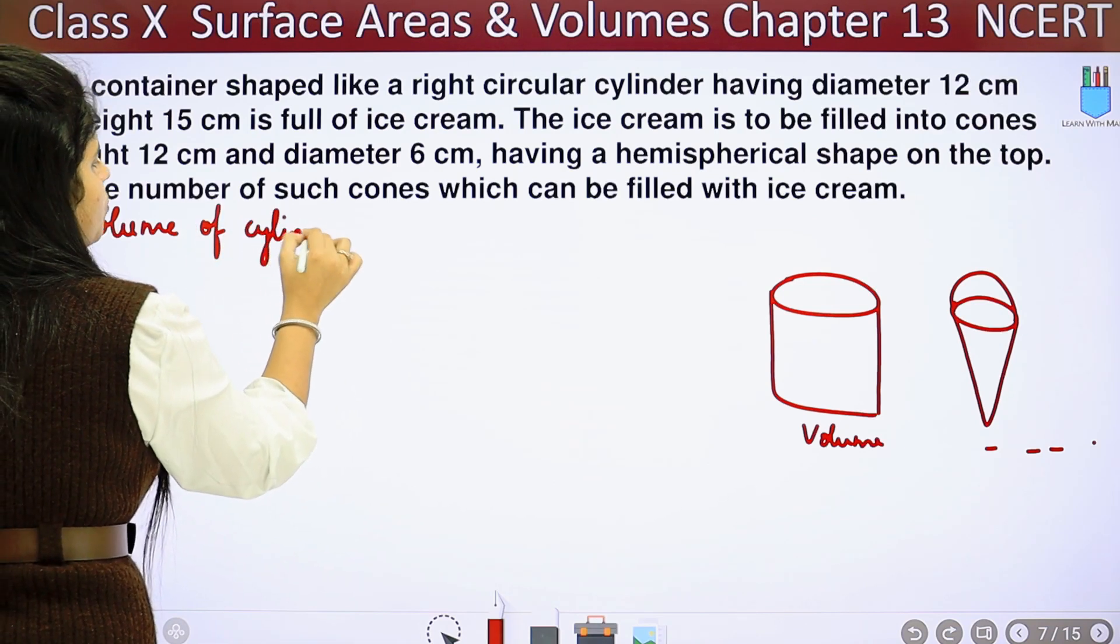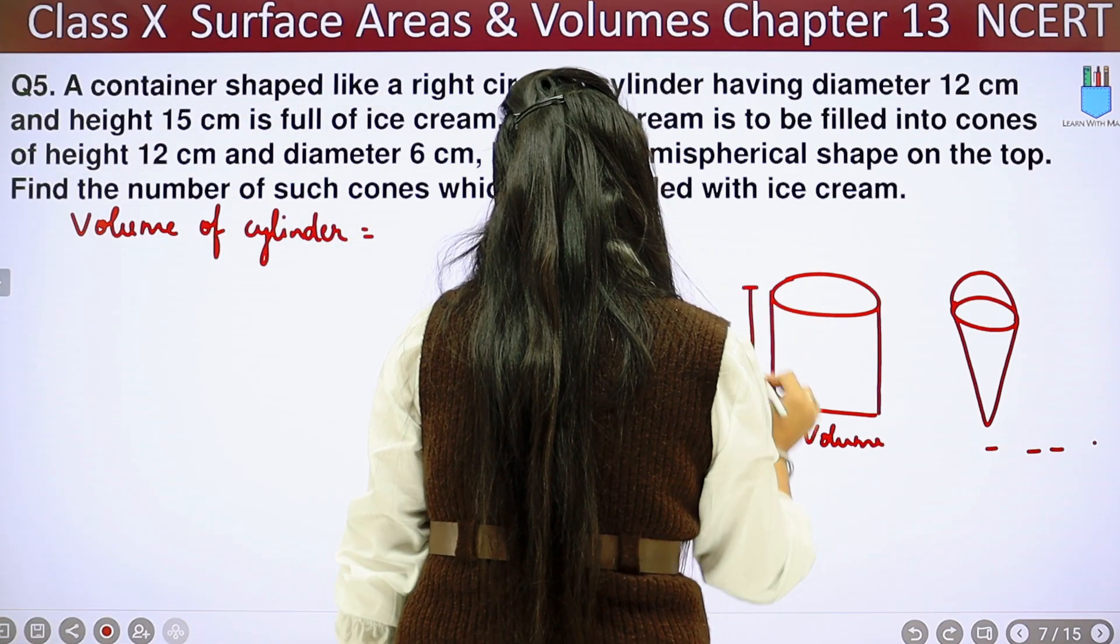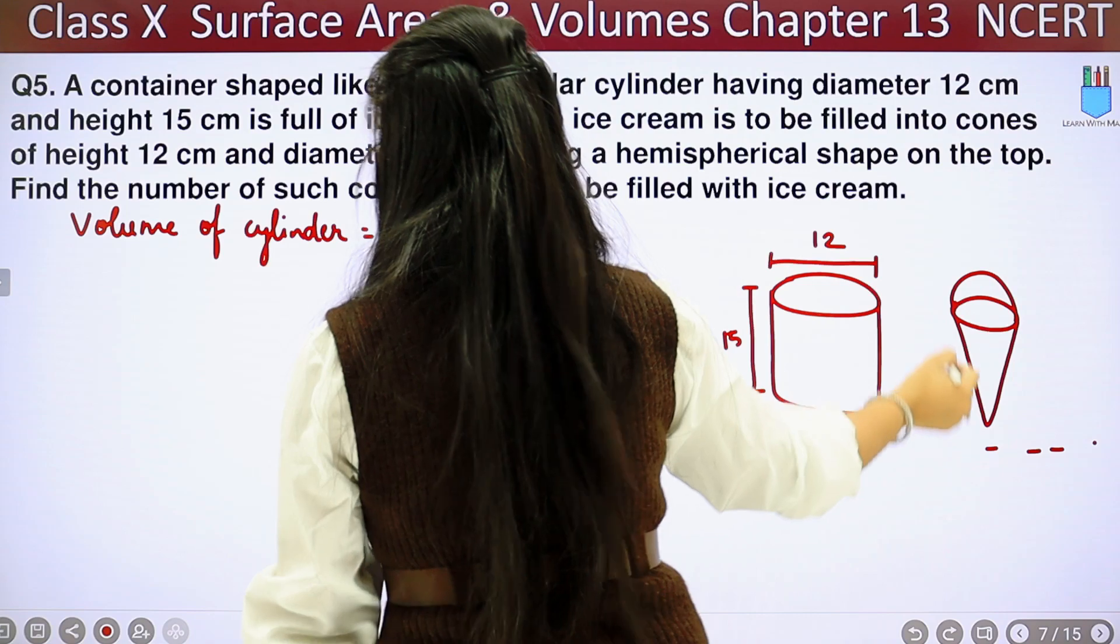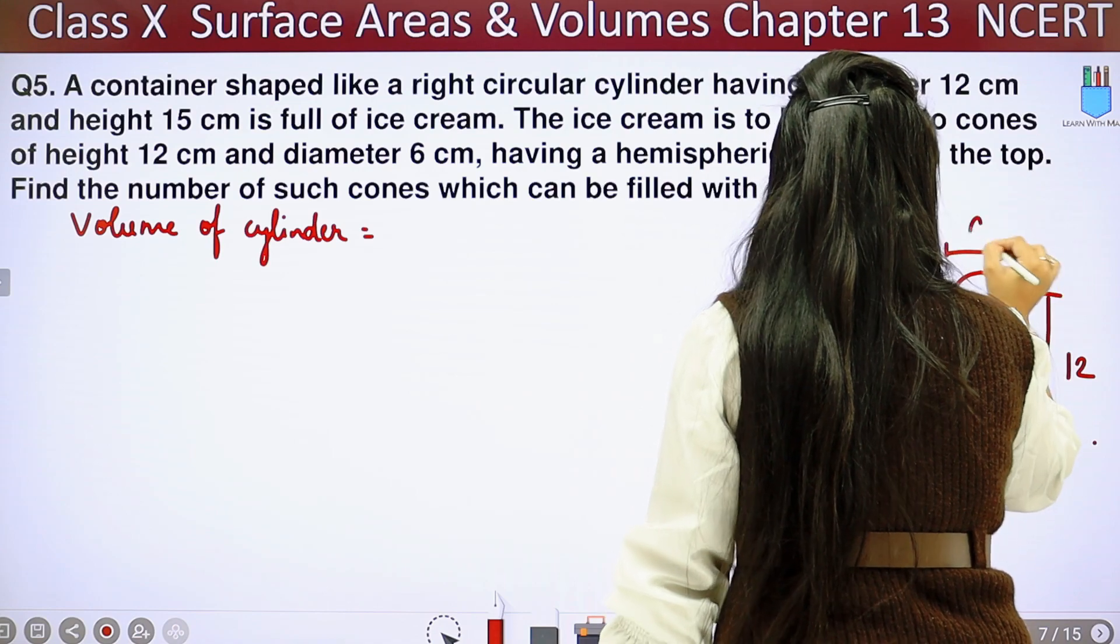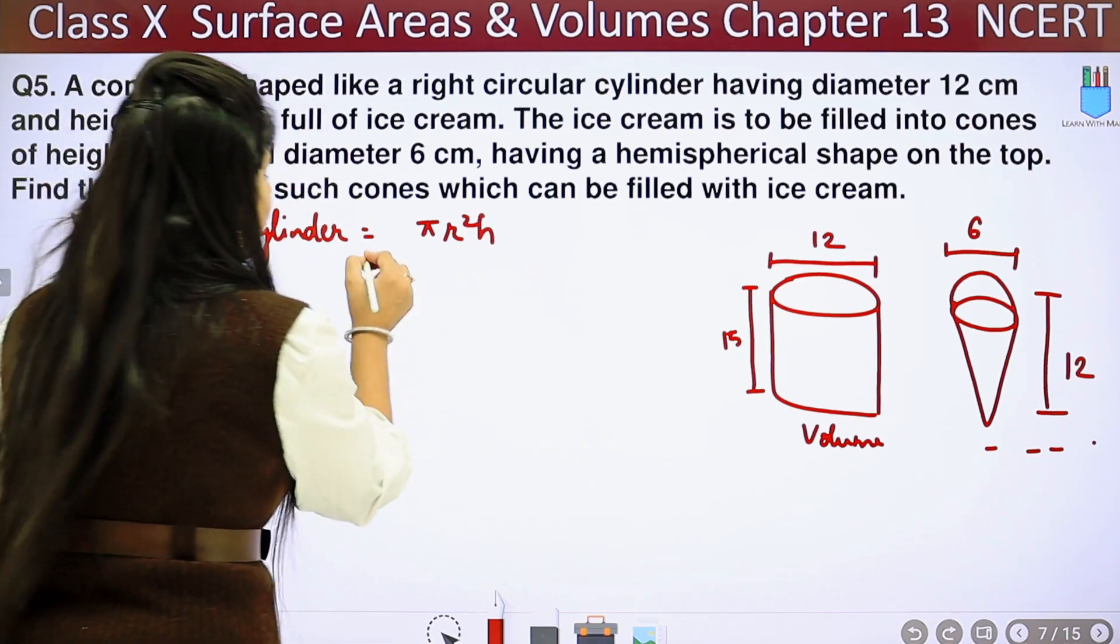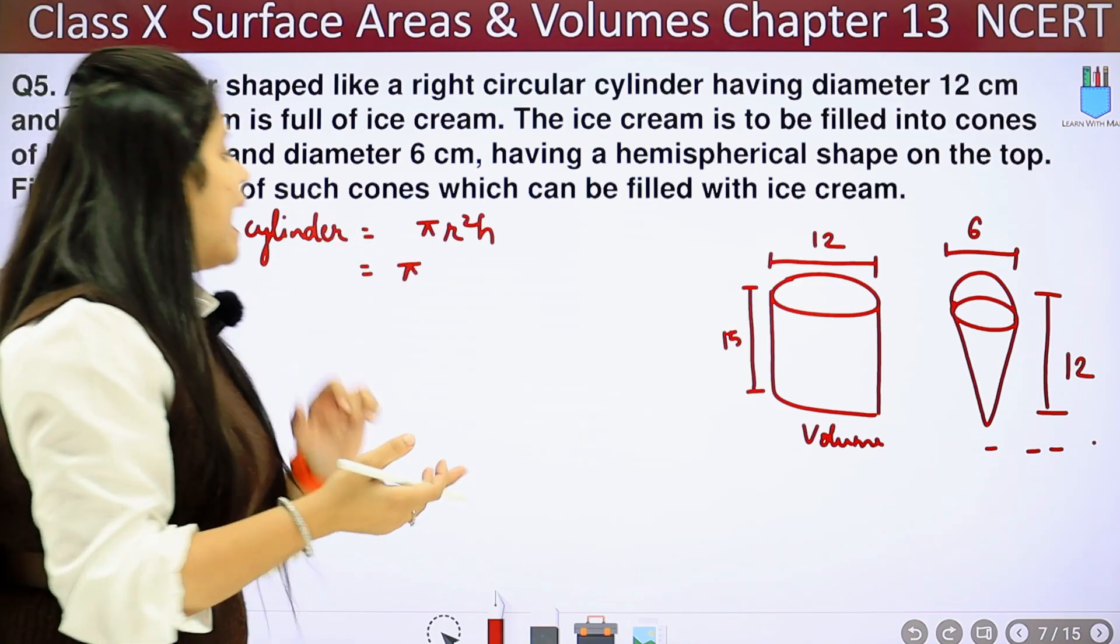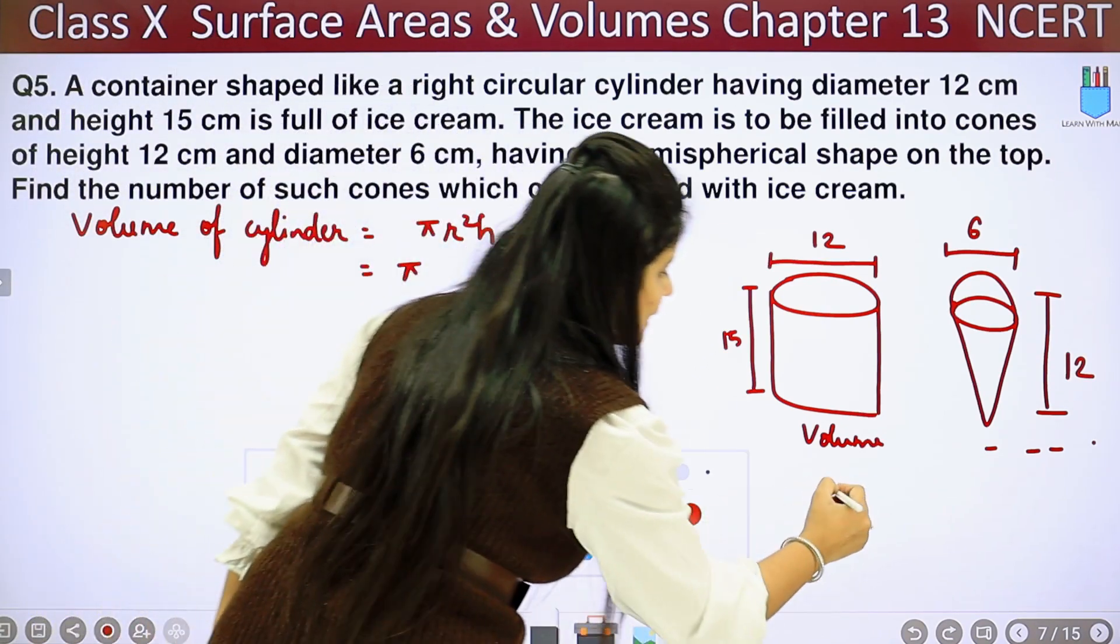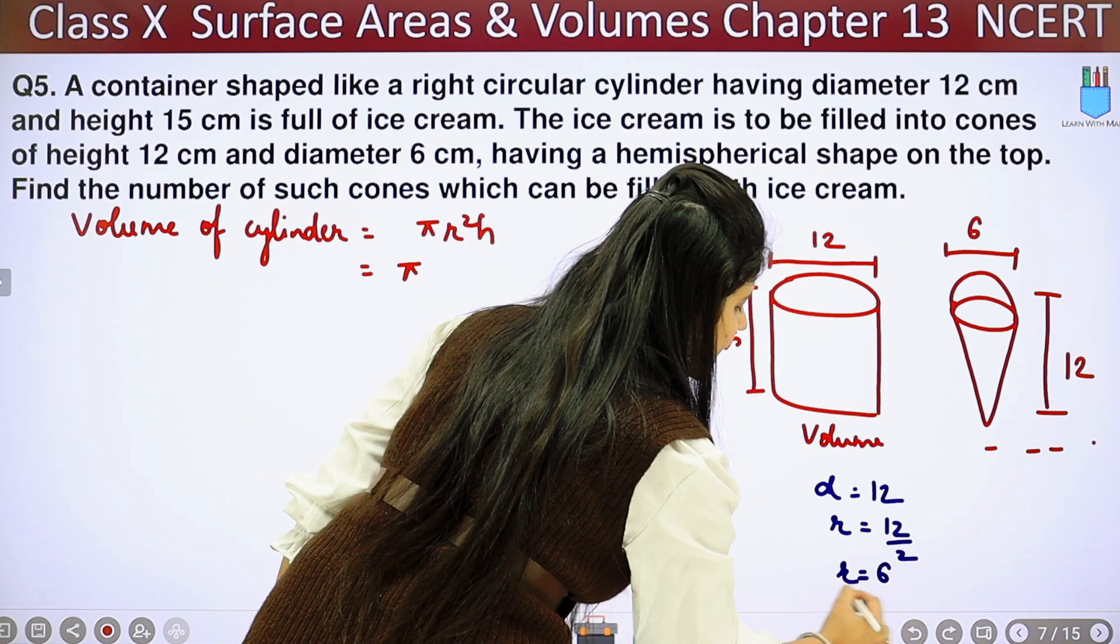First of all, volume of cylinder or volume of our container. So the height given is 15 cm and the diameter given is 12 cm. So now we are going to remove the volume of cylinder which is π r² h. So let's put values. π as it is so that we don't complicate the calculation. Let's talk about r. The diameter given is 12 cm, so radius will be 12 upon 2, which is r equals 6.